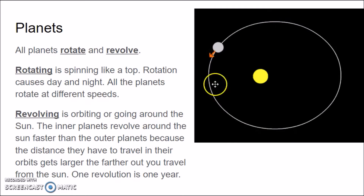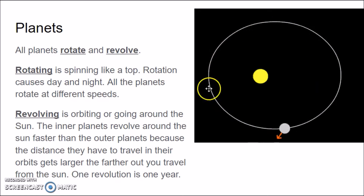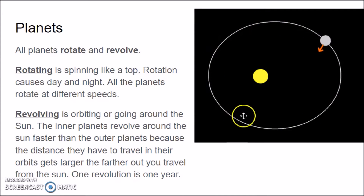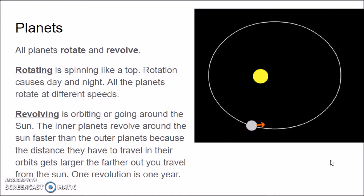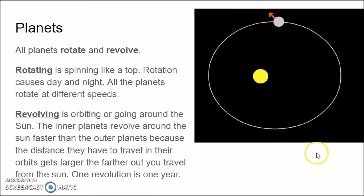The orbit or revolution is not exactly a circle — all planets travel around the Sun in an oval-shaped path called an elliptical orbit. Our planet orbits or revolves around the Sun in one year — 365 days. Mars, the next planet out from Earth, takes over 600 days because it's farther away. Jupiter and Saturn take even longer to go around the Sun.